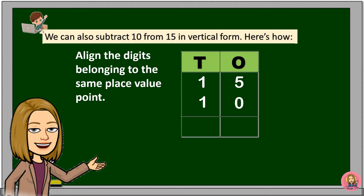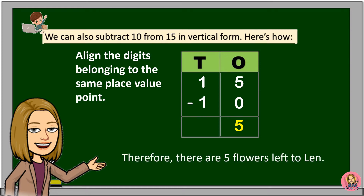We will subtract 10 from 15. So, 5 minus 0 is equal to 5. Since 1 is equal to 1, then 1 minus 1 is equal to 0. It's okay not to put the 0 because 0 is a placeholder. Therefore, there are 5 flowers left for Len.